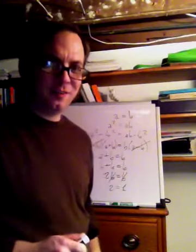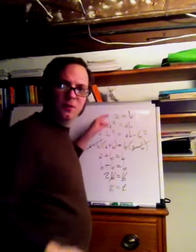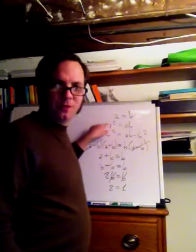Did you figure it out? Let's look at the answer to the problem. Well, we can start with a equals b, sure enough, and we can multiply both sides by a.